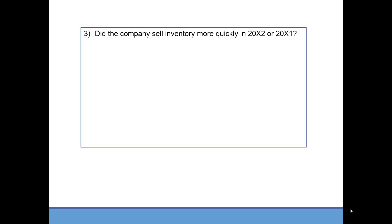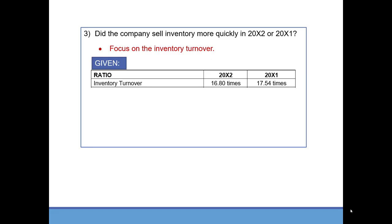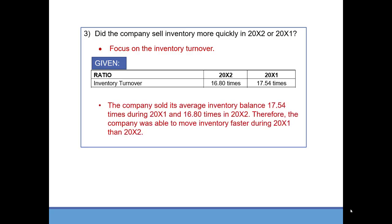Did the company sell inventory more quickly in 20x2 or 20x1? We will take a look at the inventory turnover. It's given in times per year. In the earlier year the company sold their inventory 17.54 times, while in the most recent year they only sold it 16.8 times. Therefore they were able to move inventory faster in 20x1. Note this could have been given in days but it was given in times per year.